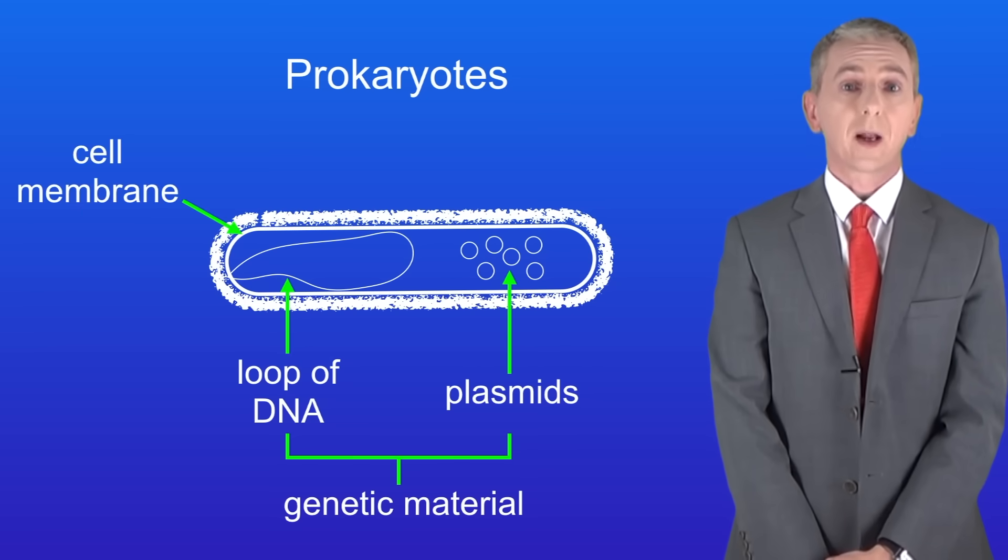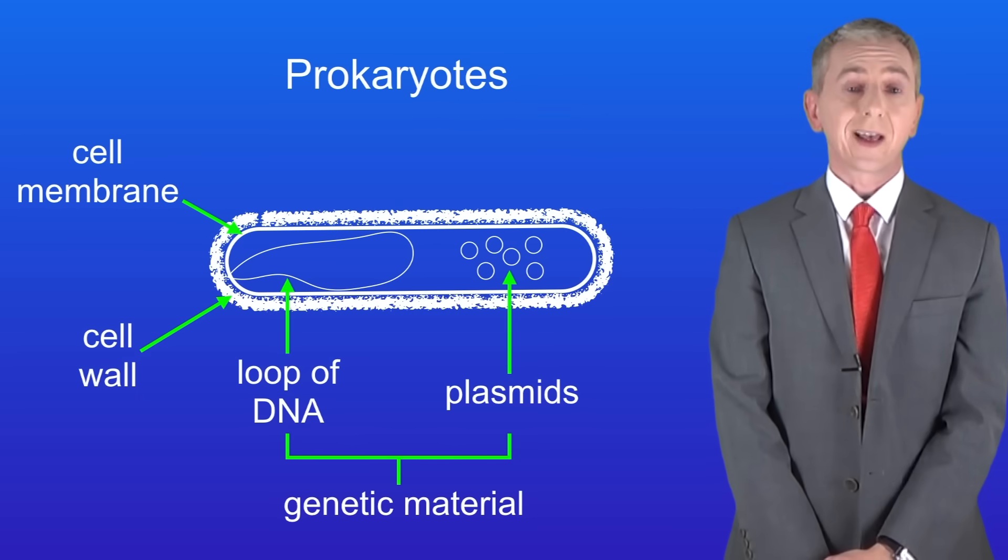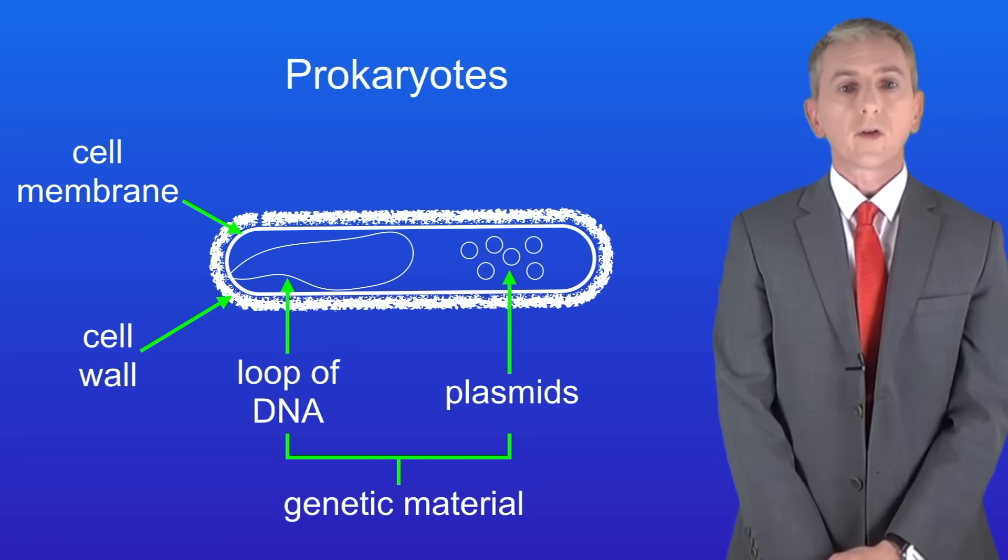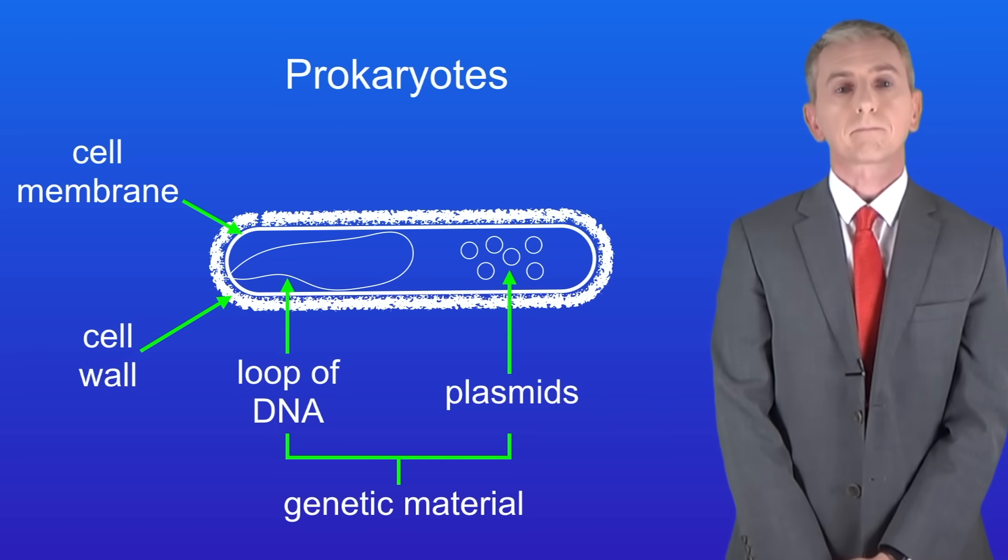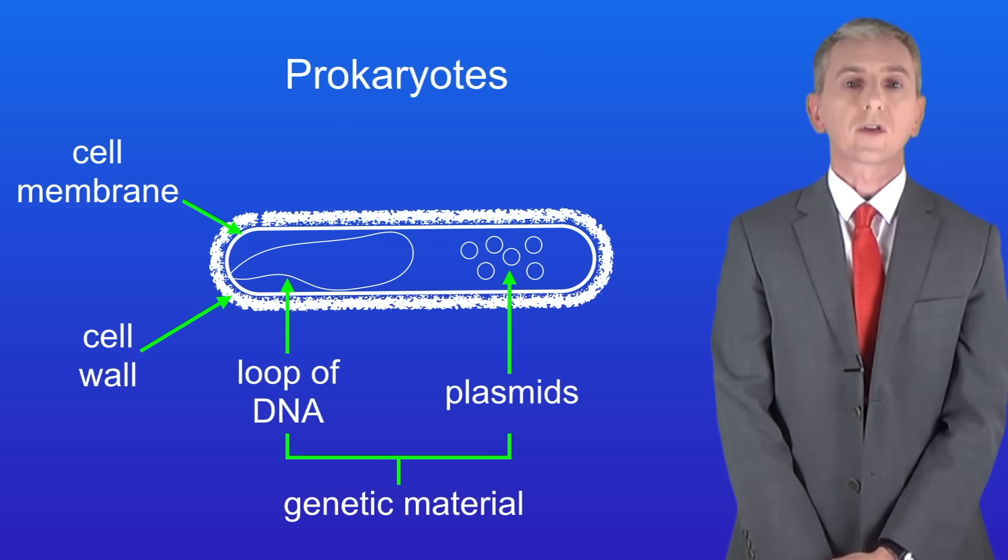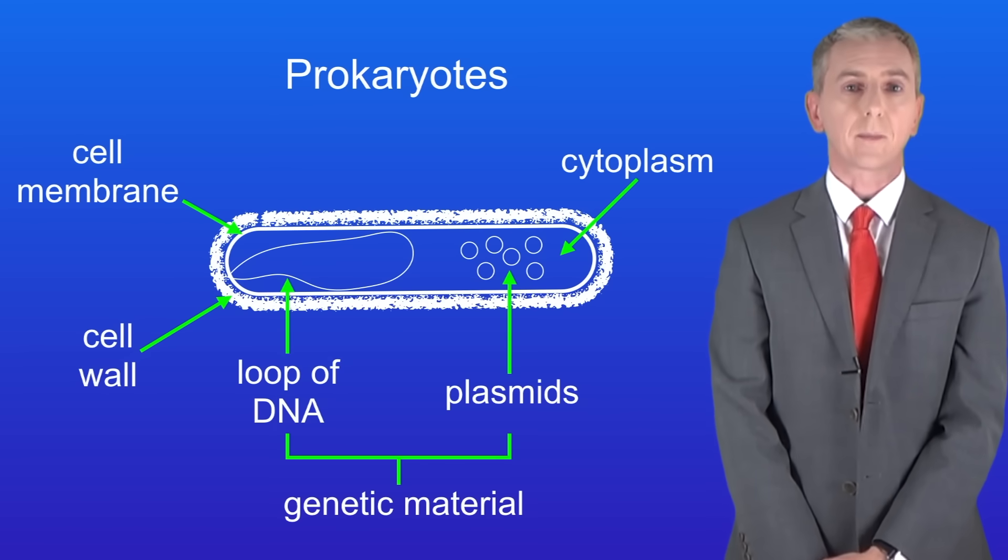Prokaryotic cells have a cell membrane, but they've also got a cell wall. It's important to remember that this is a bacterial cell wall. Don't get confused with the plant cell wall, which we're going to look at in a later video. Finally, prokaryotic cells also contain cytoplasm.